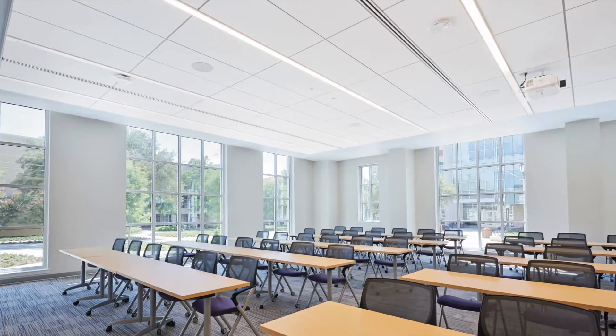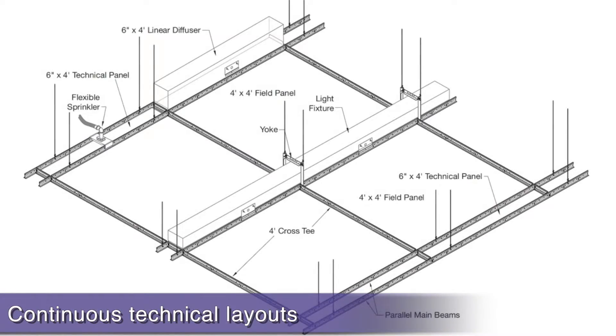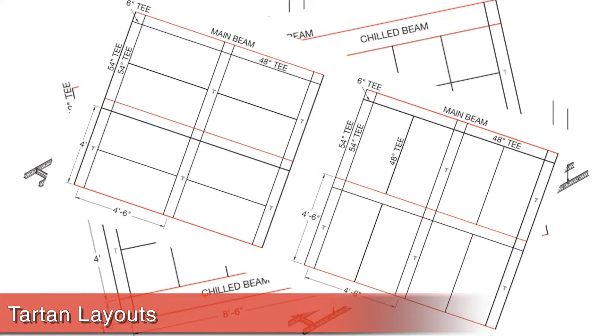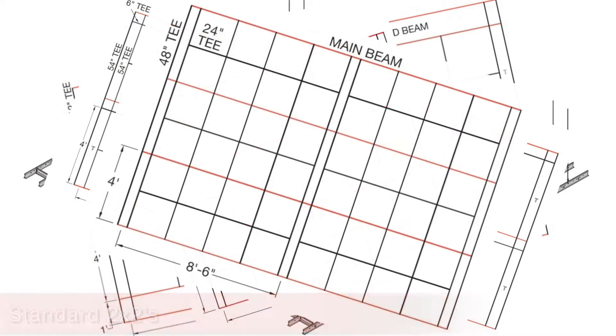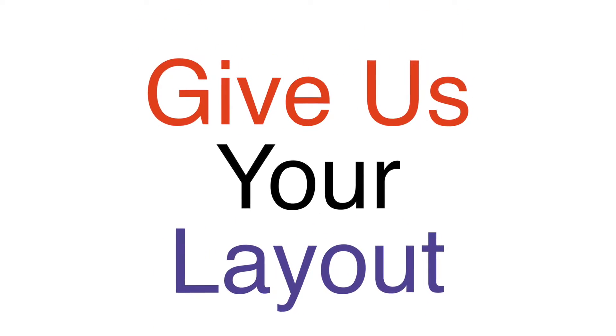Our standard parts help you create a custom visual, whether it's wood, metal, continuous fixture layouts, chilled beam integration, tartan layouts, 5-foot modules, or 2x2s, and even staggered offset modules. Give us your layout and we'll design TexZone for you.